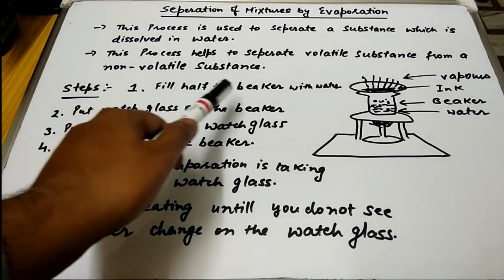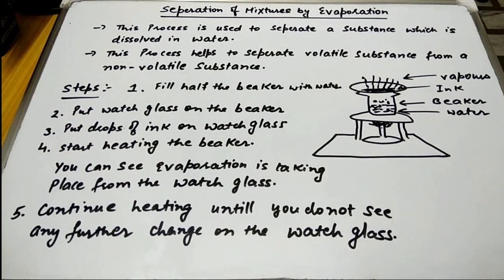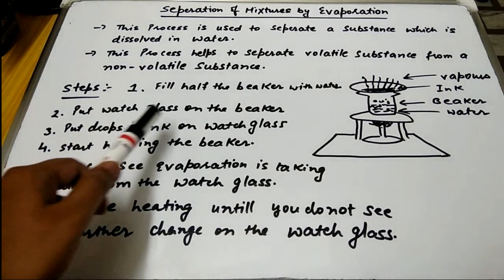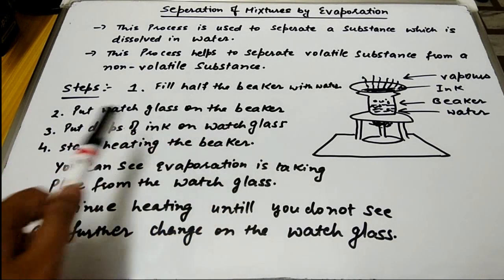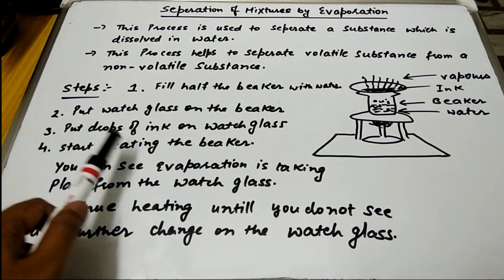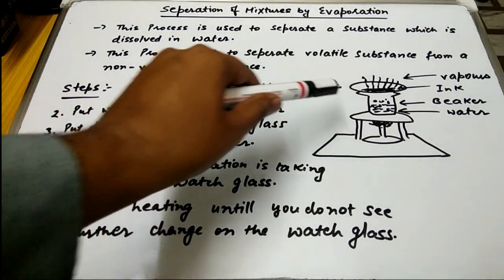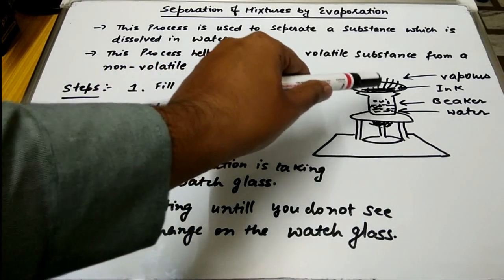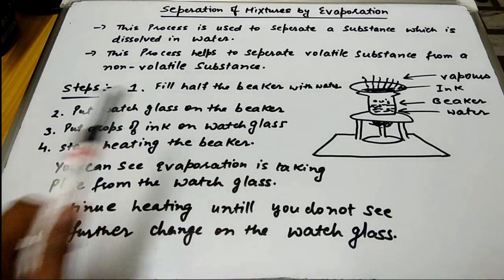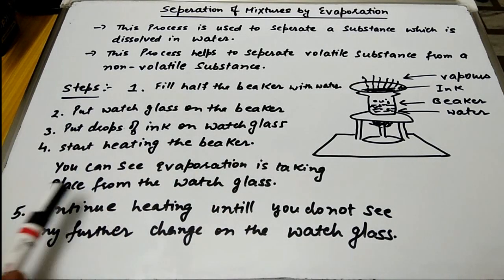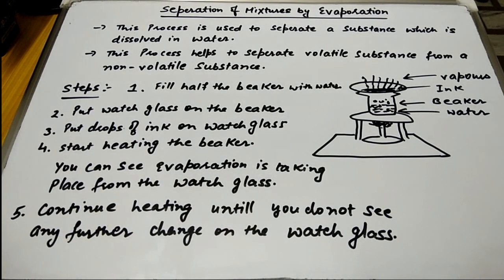Step 1: Fill half the beaker with water. Step 2: Put a watch glass on the beaker. Step 3: Put drops of ink on the watch glass. Step 4: Start heating the beaker. You can see evaporation is taking place from the watch glass, and there are certain water vapors you can observe. This is the evaporation taking place.